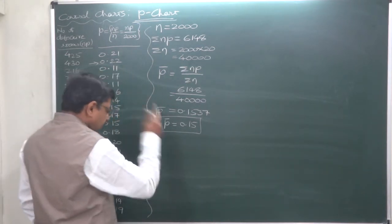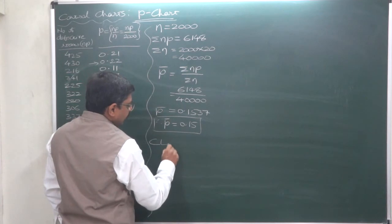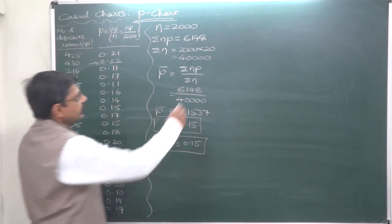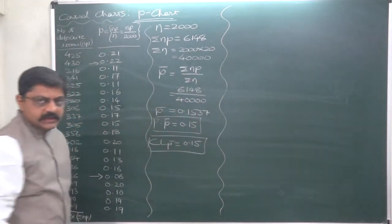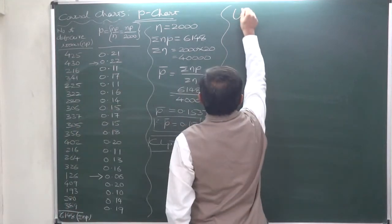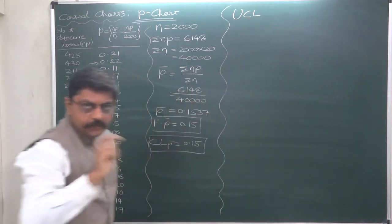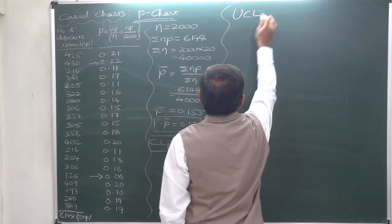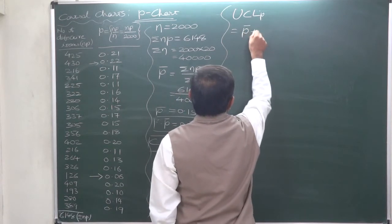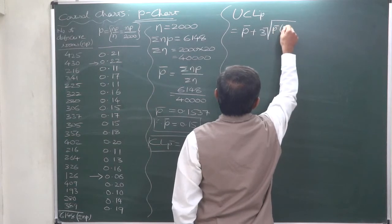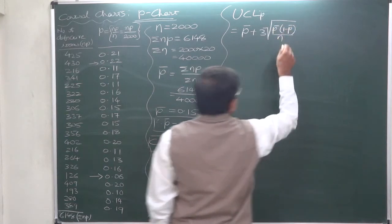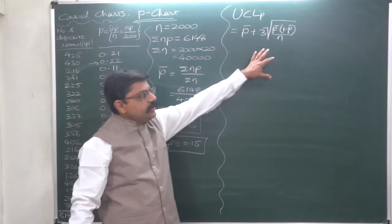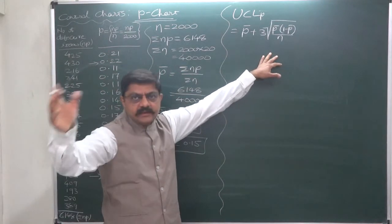Now, this P bar will be central line for us. So we have already calculated the central line. Now we need to calculate two limits, upper control limit and lower control limit. Upper control limit - please write the whole title, upper control limit, at least in your examination, upper control limit for P chart. And the formula is P bar plus 3 into under root P bar into 1 minus P bar upon N. That is common sample size.